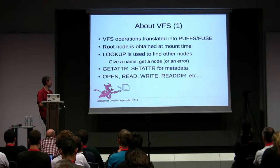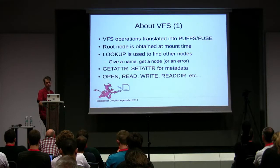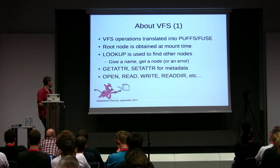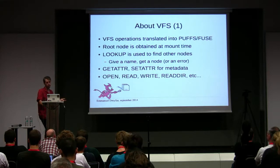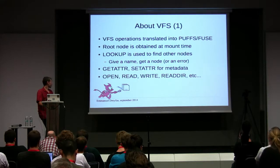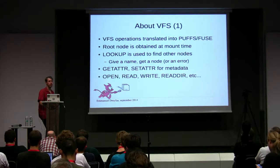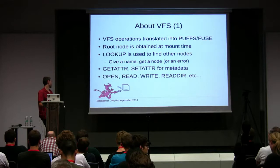The VFS translates VFS operations into requests for PUFFS. A VFS operation starts by obtaining the root vnode at mount time. Then we use the lookup method to find another vnode — you give lookup the name of a node and get a reference on a new vnode. You have methods like getattr and setattr to get metadata for a file: the mode, owner, group, size. And self-explanatory methods like open, read, and write on the file or directory.